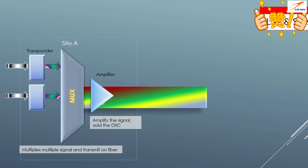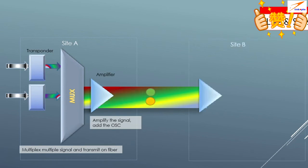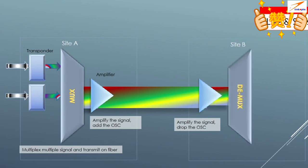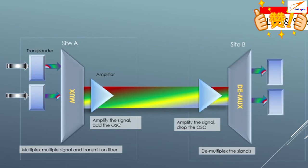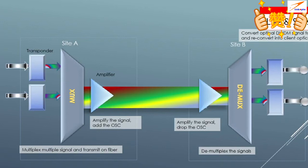After the amplifier, the signal goes out from site A. If we have a long-distance network, we may use an inline amplifier site where we are just using the amplifier, or we can use an add-drop site — also called an optical add-drop multiplexer. Assuming a two-node site, the signal goes to site B, enters the amplifier which amplifies the signal and drops the OSC channel. After the amplifier, the signal goes to a demultiplexer that separates the channels, and the output goes to a transponder that converts the optical DWDM signal back to electrical and then to the client optical signal, handing it over to the client.